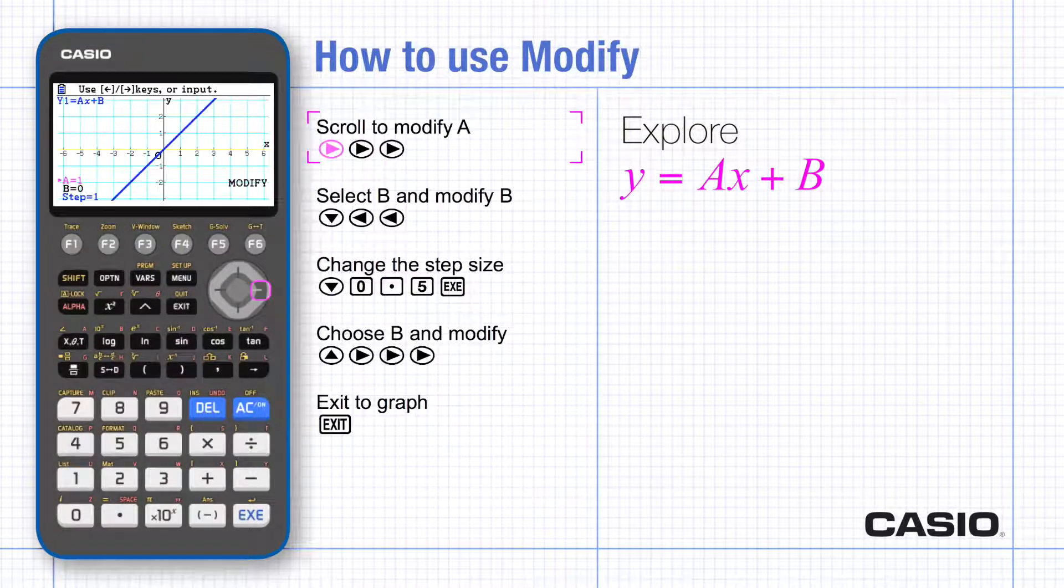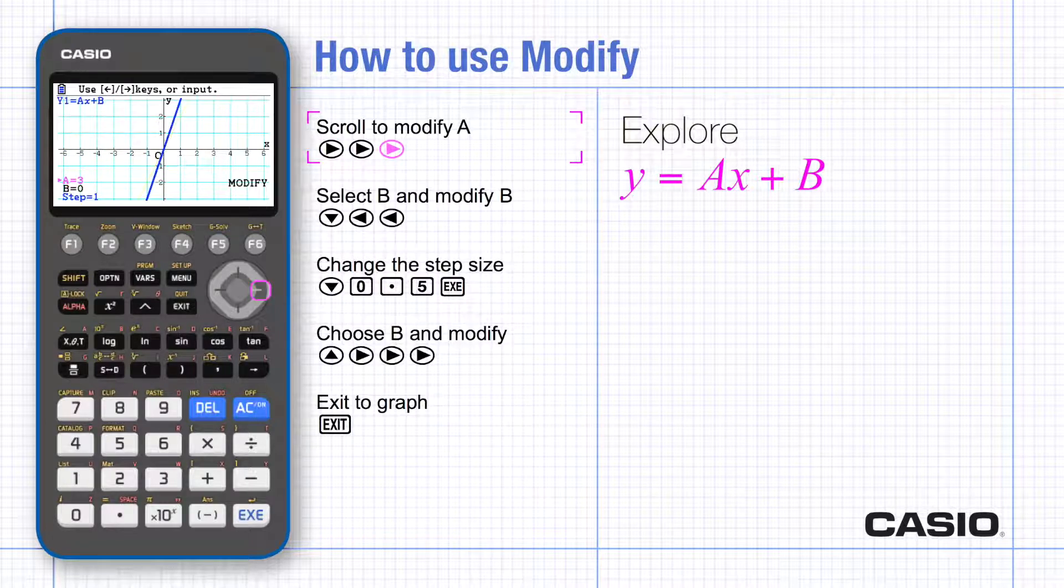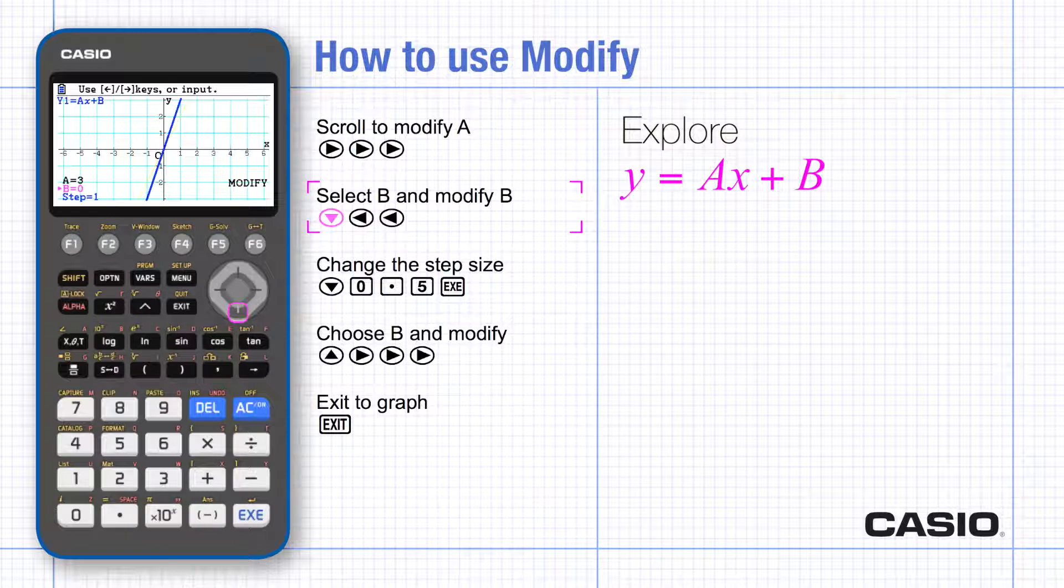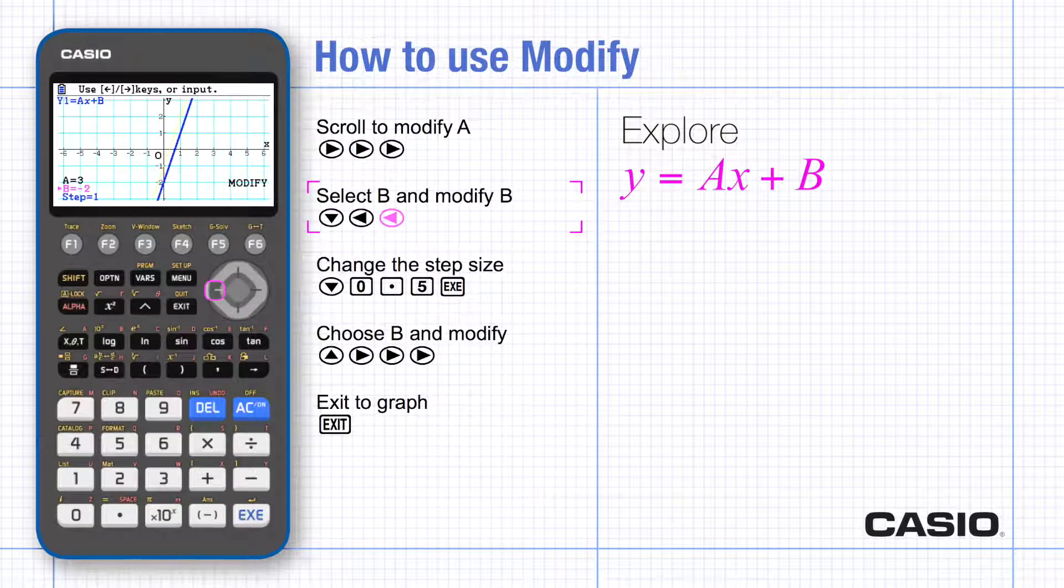Scroll to the right to increase the value of a, and it increases by one each time. Scroll down to select b and then you can scroll to the left to decrease the value of b. Notice the yellow line shows where the graph had previously been.